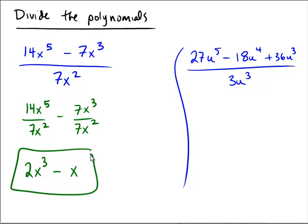Now, on the right, distributing, we have 27u to the fifth divided by 3u cubed minus 18u to the fourth over 3u cubed plus 36u cubed over 3u cubed.